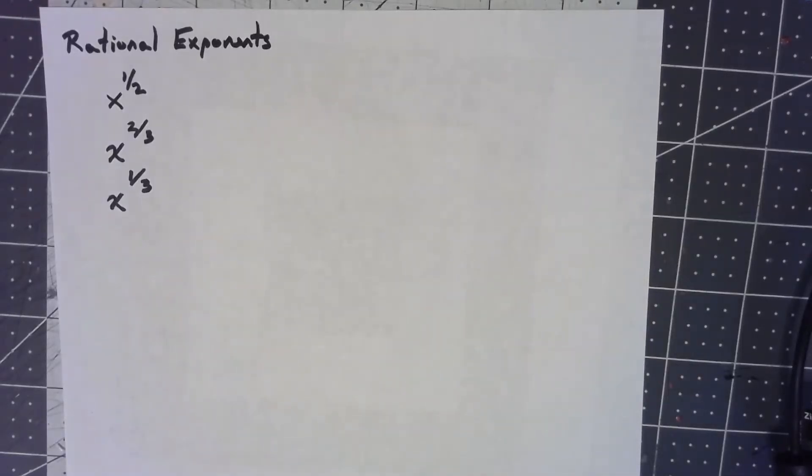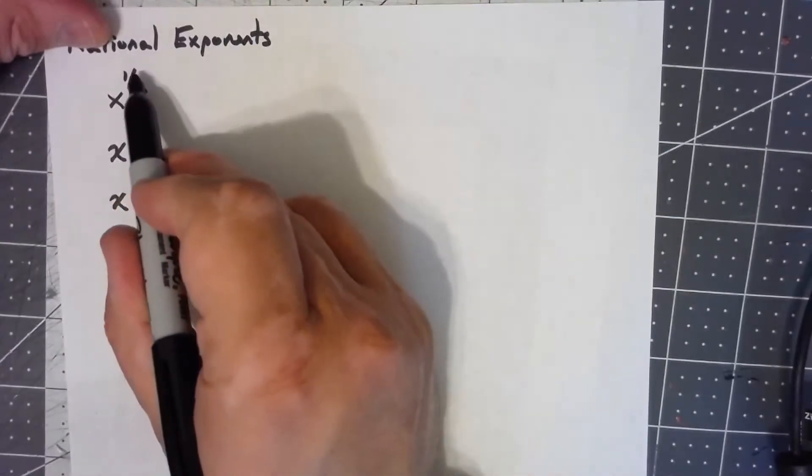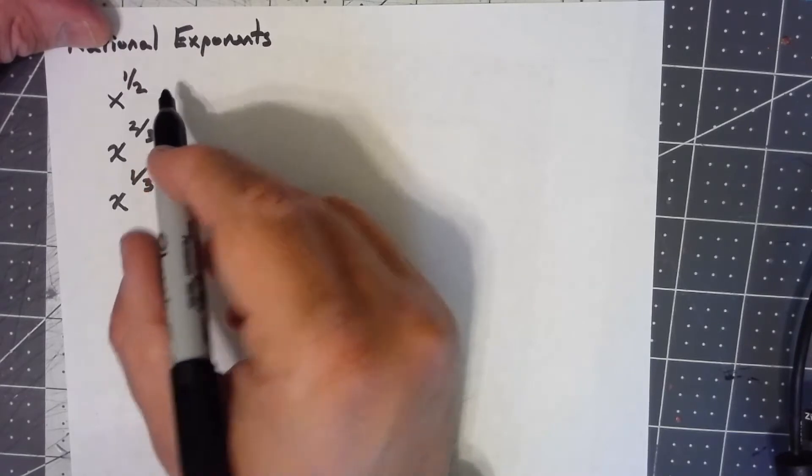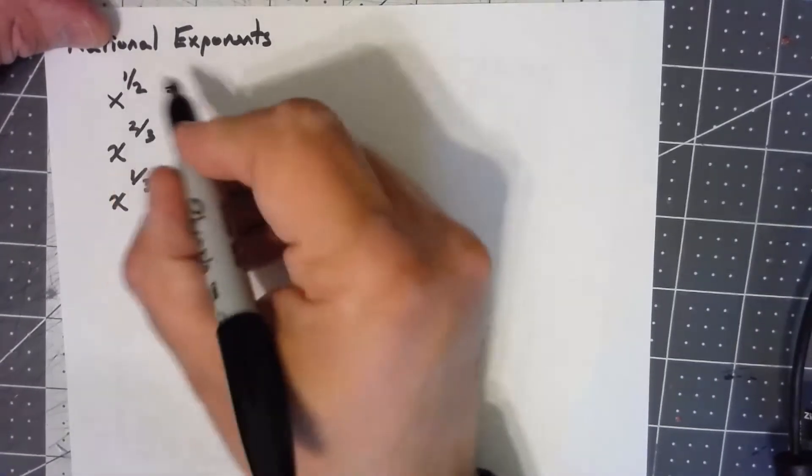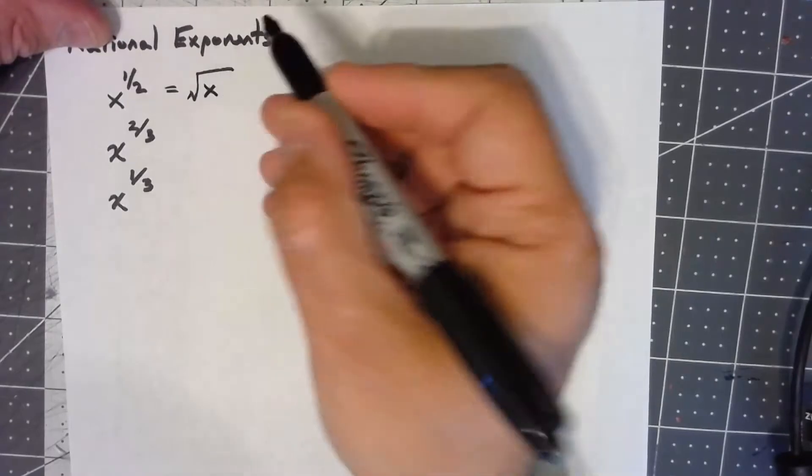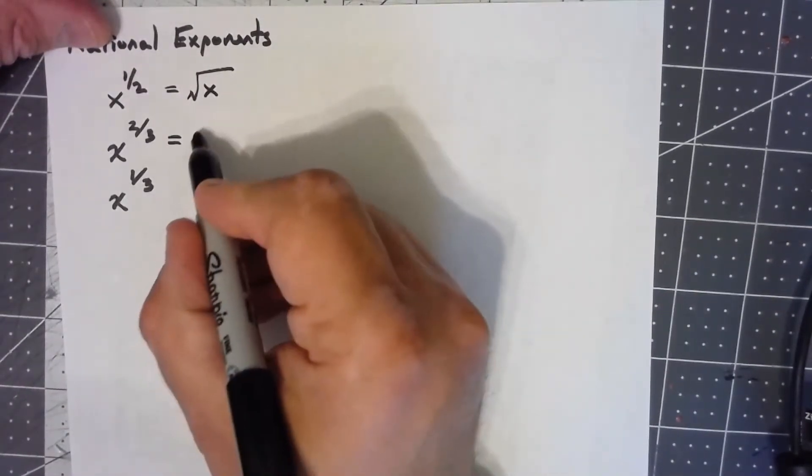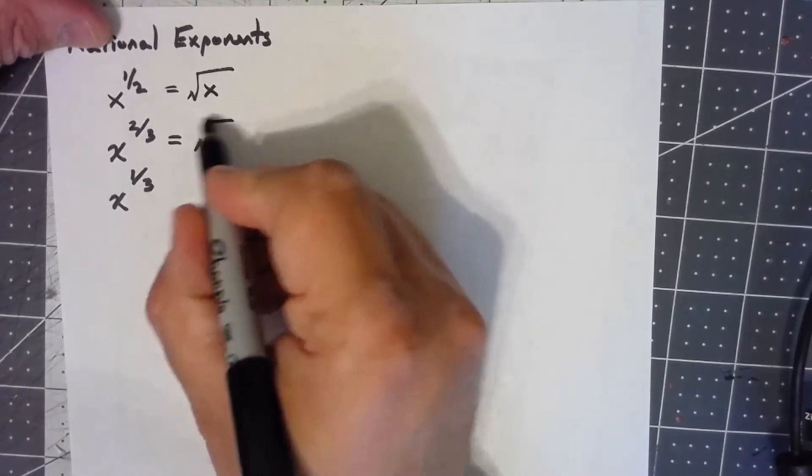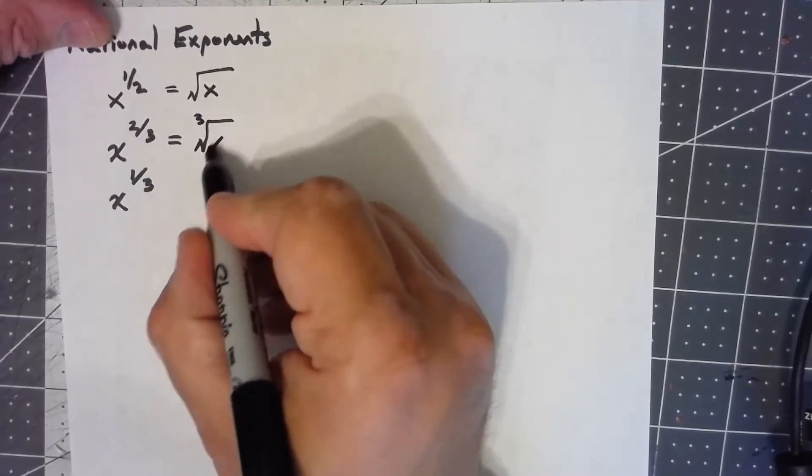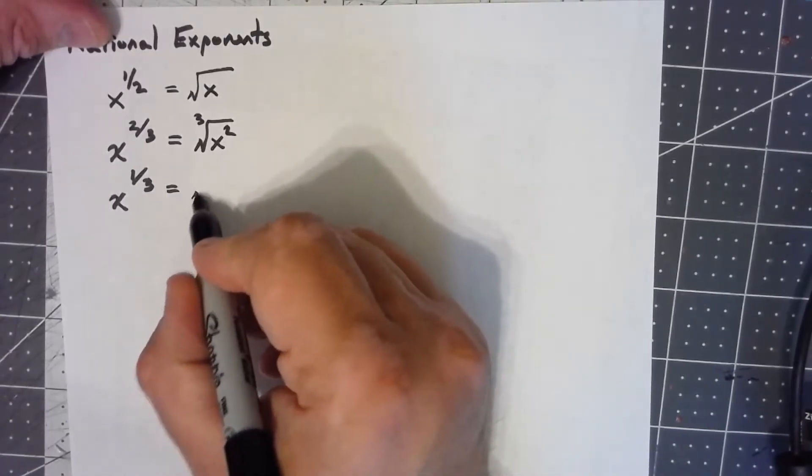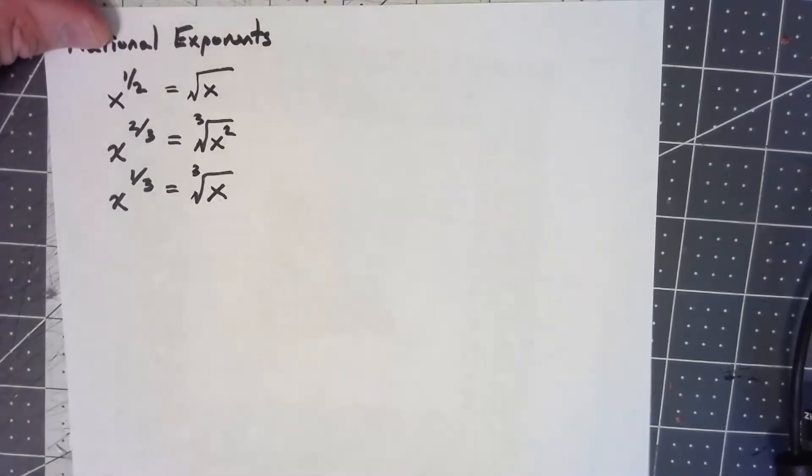Let's remember a little bit about rational exponents. The first thing to remember is that the top gives the power and the bottom gives the root. So x to the 1/2 is the square root of x to the first. x to the 2/3 is a cube root because the 3 is on the bottom, of x squared. x to the 1/3 is again a cube root but only x to the first.